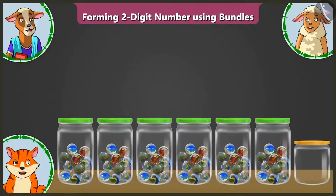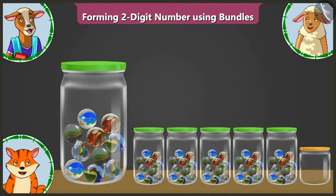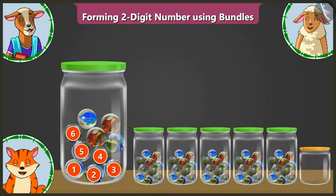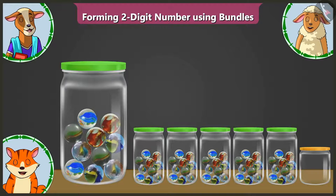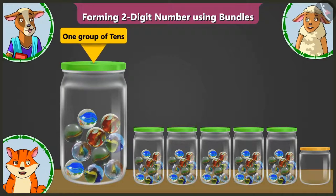Look, here are some jars filled with marbles. Let us count. The first jar has one, two, three, four, five, six, seven, eight, nine and ten marbles. This means that this is one group of tens.